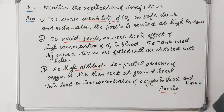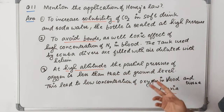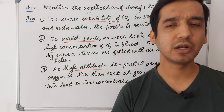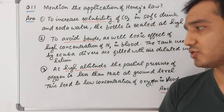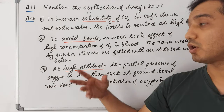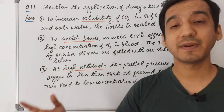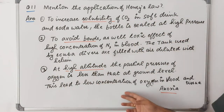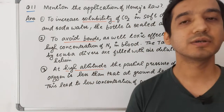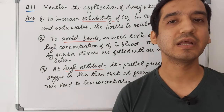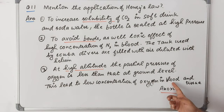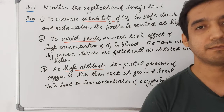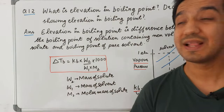Third application: at high altitude, the partial pressure of oxygen is less than at ground level. Because the outside pressure is less, the concentration of oxygen in the blood and tissues decreases. This condition is called anoxia.